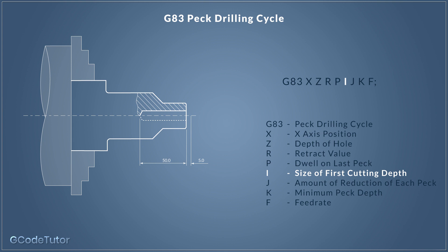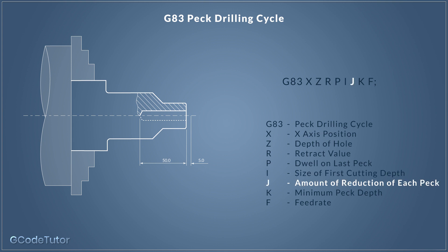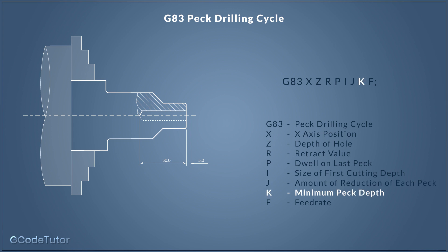These I, J, and K values are not in microns — they use standard dimensional sizes. So if we wanted our first peck to be 10 millimeters, we would say I 10.0. The J word is the amount of reduction of each peck. If our first peck is 12 millimeters and we set J to 2 millimeters, the next peck would be 10 millimeters and the one after would be 8 millimeters — reducing by J after each peck. This continues until it hits the minimum peck depth, which we define using the K word. So if we set K to 5 millimeters, it would keep reducing until each peck is only 5 millimeters, then stop reducing and continue peck drilling at 5 millimeters.